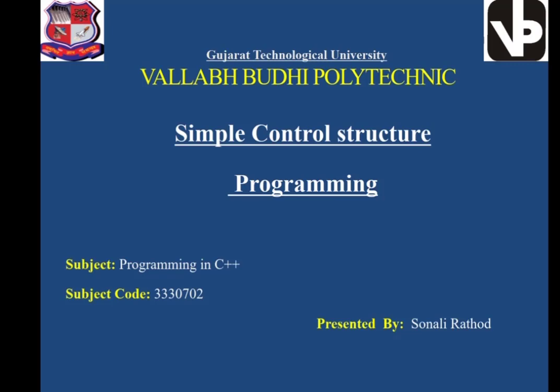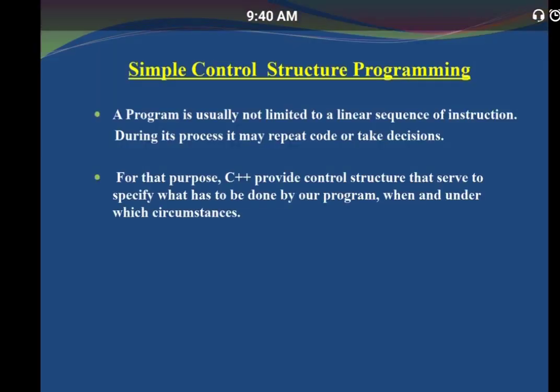So maybe you think, what is a control structure? A program is usually not limited to a linear sequence of instructions. During its process, it may repeat code or take decisions. Sometimes we want to take a decision, and for that there are different control structures. C++ provides control structures that serve to specify what has to be done by our program, when and under which circumstances.